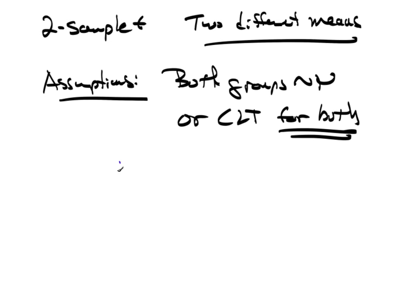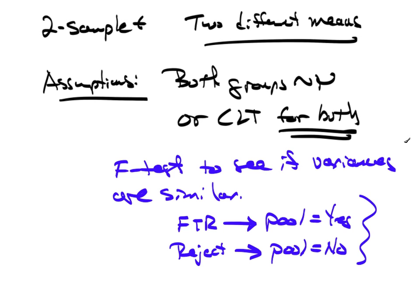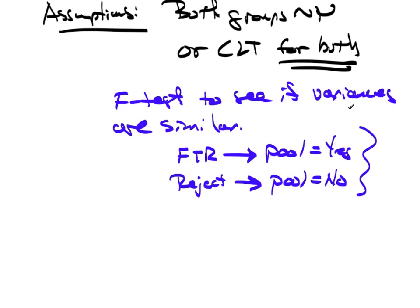And then we're going to break off and do an F-test to see if the variances are similar. If you fail to reject on the F-test, then pool equals yes, you will pool. If you reject on the F-test, then pool equals no. And these yes and no makes reference to what you're going to do when you go back and do the two-sample T. And then you would complete the two-sample T-test based on the results here.